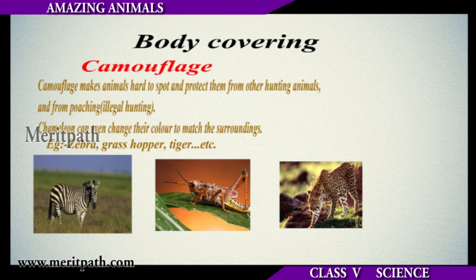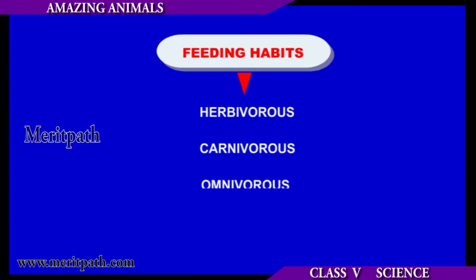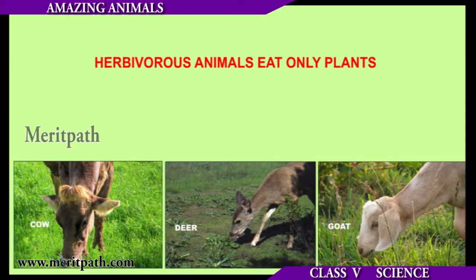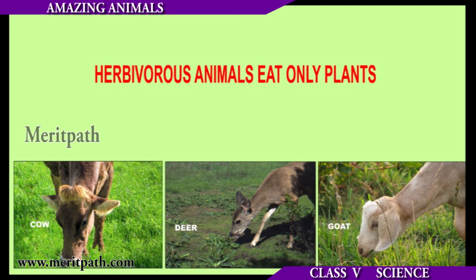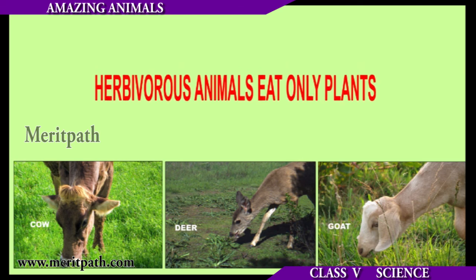Poaching is illegal hunting. Different animals have different feeding habits. Some animals are herbivorous, some are carnivorous, and some are omnivorous. Herbivorous animals eat only plants. Examples of herbivorous animals are cow, goat, deer, etc.